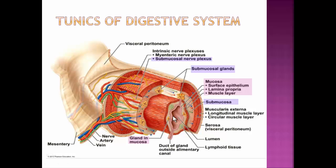The next layer is the submucosa — a layer of connective tissue rich in blood supply, lymphatic vessels, and nerve fibers that feed into the lamina propria of the mucosa. It also contains one of the enteric nerve plexuses, the little nervous system of the digestive system itself. Then we have the muscularis externa — the large smooth muscle layer, consisting of two layers of smooth muscle in most of the digestive tract: a longitudinal muscle layer and a circular muscle layer, used for segmentation and peristalsis to mix or move food along. The last layer is the serosa, which is essentially the same as the visceral peritoneum.